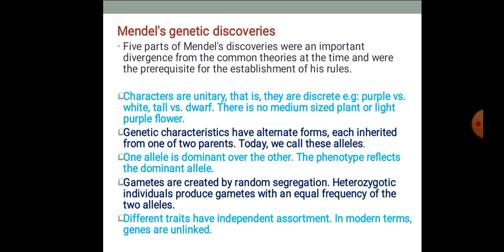Genetic characteristics have alternate forms, each inherited from one of two parents — today we call these alleles. One allele is dominant over the other, and the phenotype reflects the dominant allele. Gametes are created by random segregation.